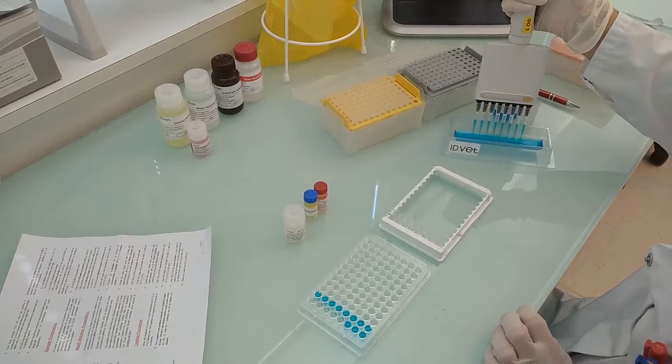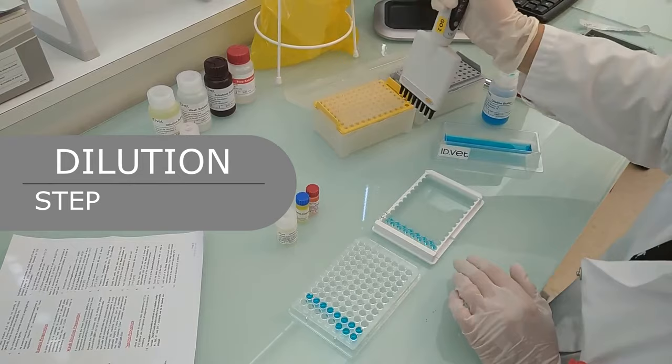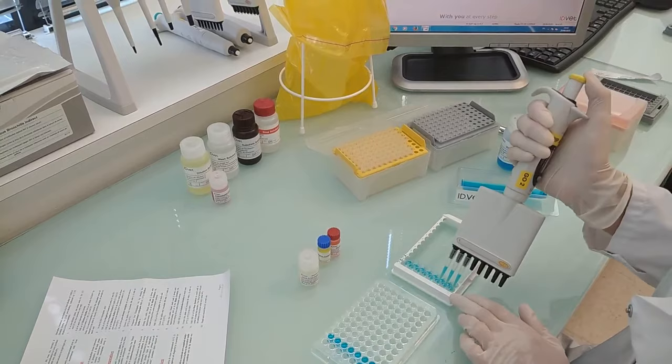Dilution step: In the ELISA microplate, add X microliters of dilution buffer 14 to as many wells as there are samples to be tested, not to control wells A1, B1, C1, D1, and E1 if necessary.